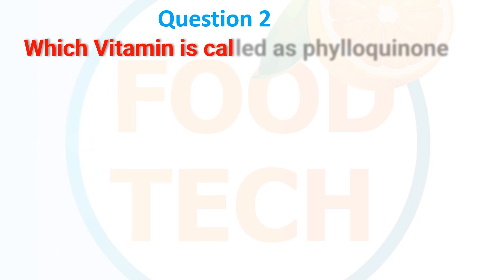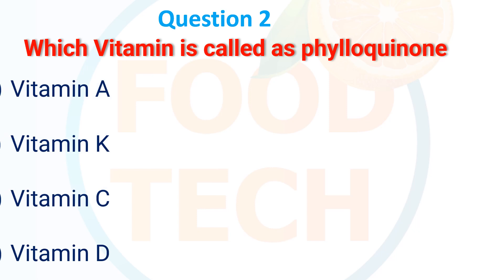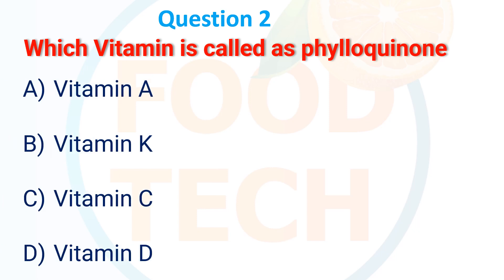Question 2: Which vitamin is called phylloquinone? A. Vitamin A, B. Vitamin K, C. Vitamin C, D. Vitamin D. The answer is B. Vitamin K.